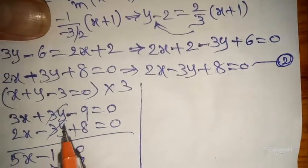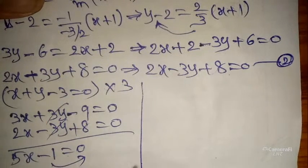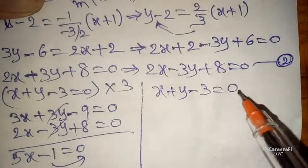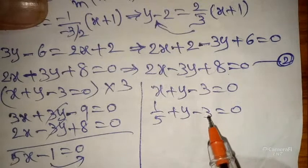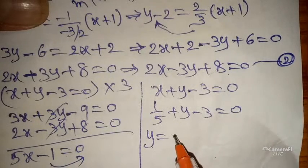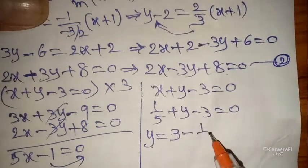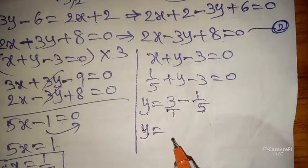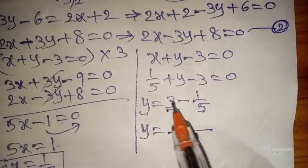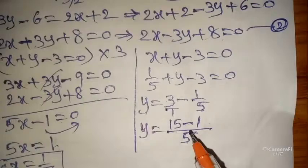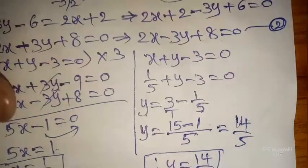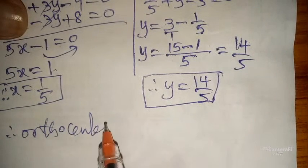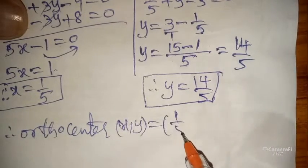Substituting x = 1/5 into the first equation x + y - 3 = 0: (1/5) + y - 3 = 0, so y = 3 - (1/5). Taking LCM of 5: y = (15 - 1) / 5 = 14/5. Therefore, the orthocenter is at (x, y) = (1/5, 14/5). This is our required answer.